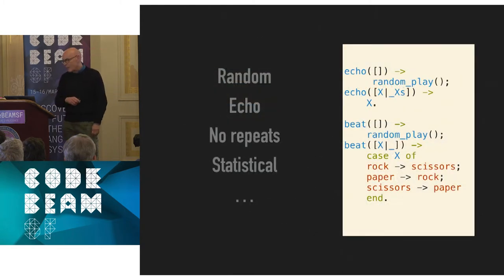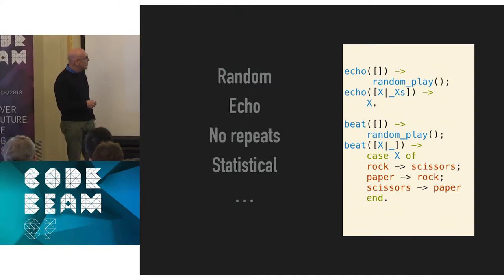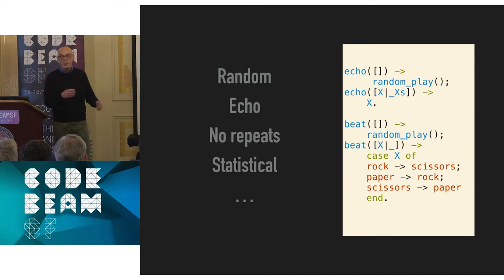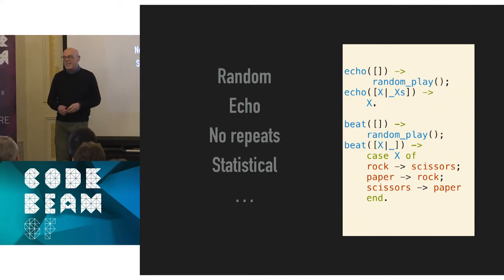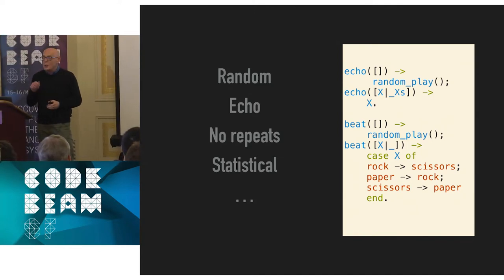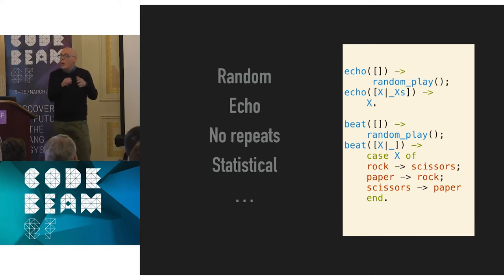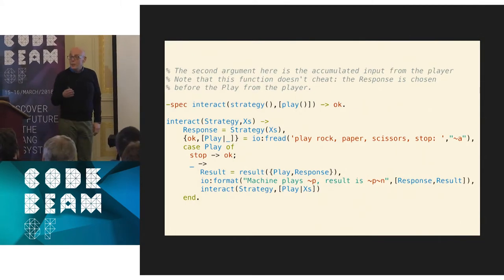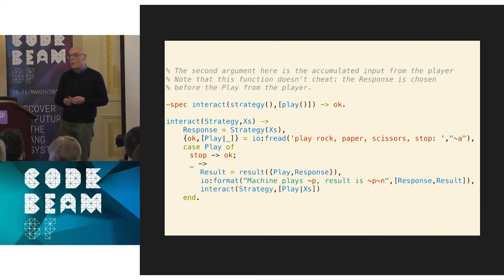For example, the echo strategy: when there's been no play at all you make some random move, otherwise you choose the previous move of your opponent — building the list so the most recent play is at the front. The beat strategy looks at the last play and says if they played rock last time, assume they won't play rock again, so they'll play paper or scissors; if I choose scissors I either draw or beat them. The nice thing is we're encapsulating that behavior in a function.